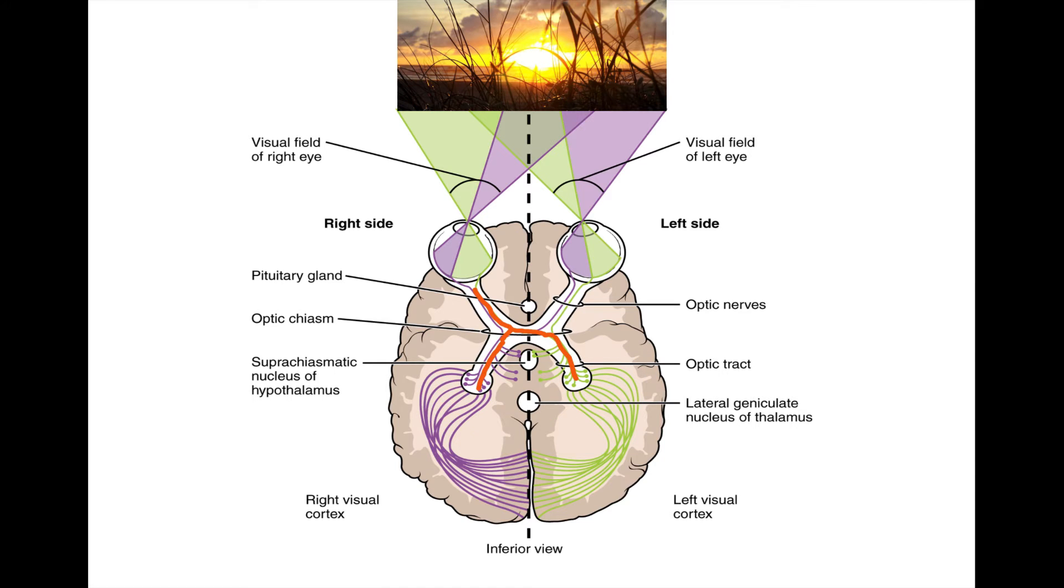The optic tract then travels to the lateral geniculate nucleus of the thalamus, before traveling further via optic radiations to finally reach its destination in the visual cortex of the occipital lobe. And that's it! Once the signal reaches the visual cortex, its journey is complete, and the brain is able to convert these signals into the conscious image of sight.